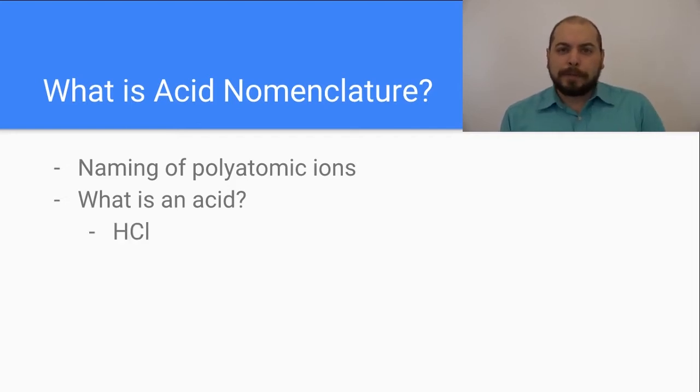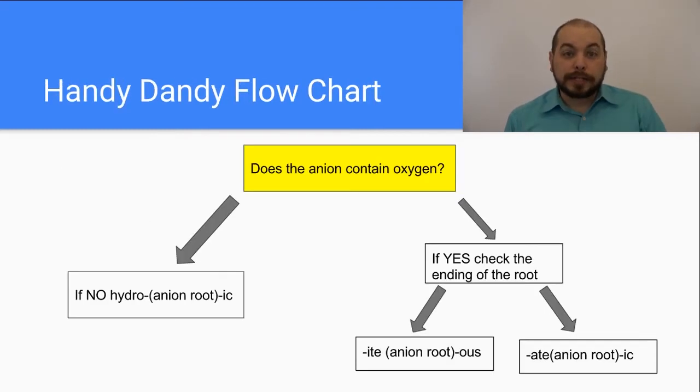For example, you might be familiar with hydrochloric acid, HCl. Today we're going to discuss how and why it is named the way it is. So let's take a look at the flowchart. Now the first question on the flowchart is asking, is there oxygen in the anion? Now if there is not oxygen in the anion, we're going to follow the flowchart to the left, and our acid will be named hydro, followed by the root of the anion, followed by ic acid.